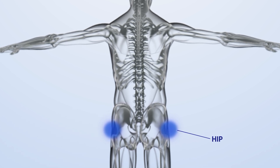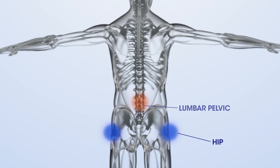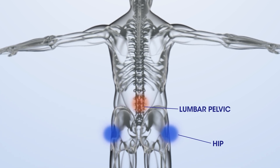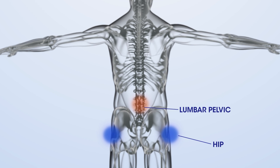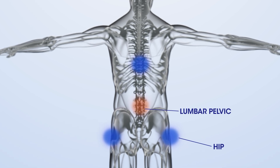The next region is the lumbar-pelvic area — another term we use often in training — the core, which should be nice and stable. Moving to the next region up, the thoracic spine is designed to be mobile, which allows our trunk to turn.